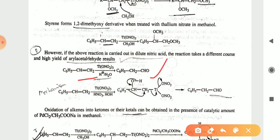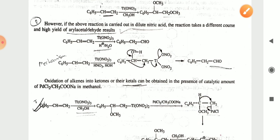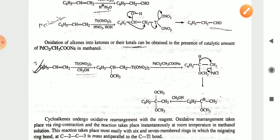The mechanism shows that the C=C double bond breaks, the OH group attaches to one carbon, and on the other carbon the thallium nitrate group leaves. Finally you get the aryl acetaldehyde as the resultant product.